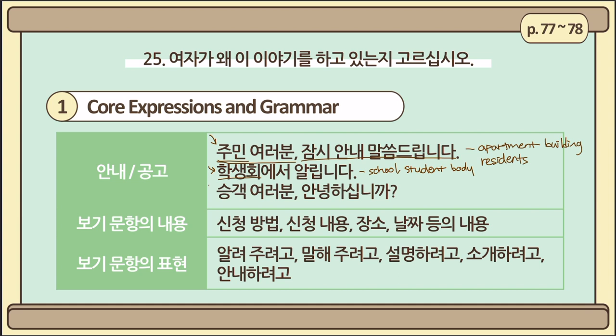How about the next one? 승객 여러분, 안녕하십니까? 승객 여러분 means 'all our passengers.' This greeting should be heard inside a means of transportation like a bus or airplane. In this way, please try to identify the target audience within the first sentence of the passage. It will help you more easily anticipate the keywords that will appear in the sentences that follow.